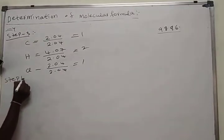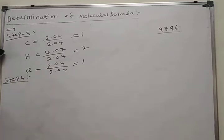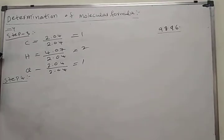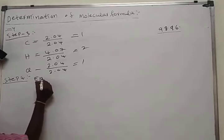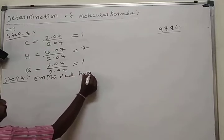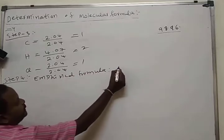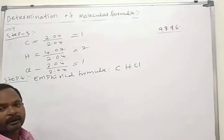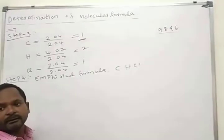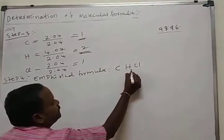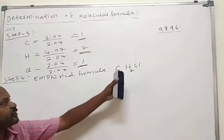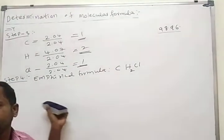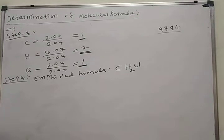Step 4: write the empirical formula. Carbon first, then hydrogen, then chlorine. Carbon: 1, hydrogen: 2, chlorine: 1. So the empirical formula is CH2Cl.